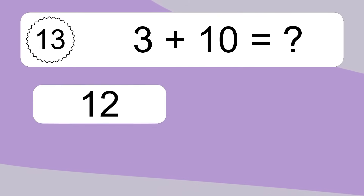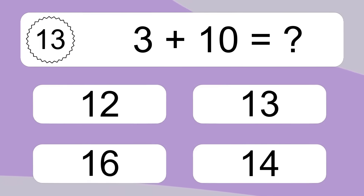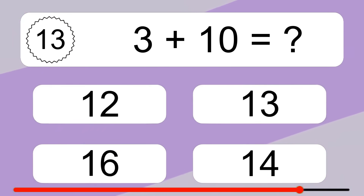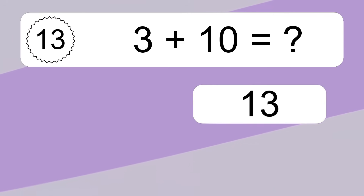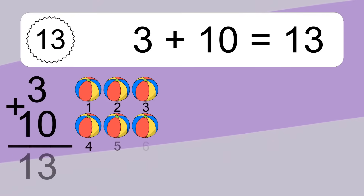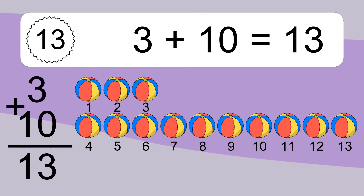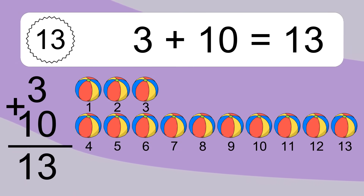3 plus 10 equals what? 3 plus 10 equals 13. Let's count it: 1, 2, 3, 4, 5, 6, 7, 8, 9, 10, 11, 12, 13.